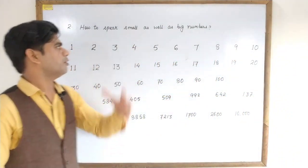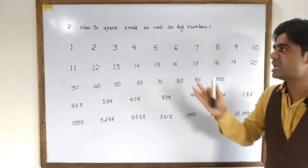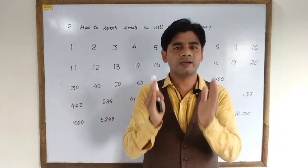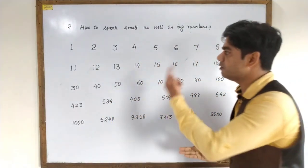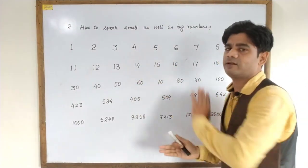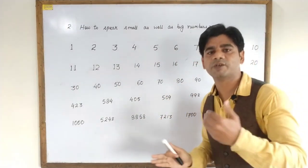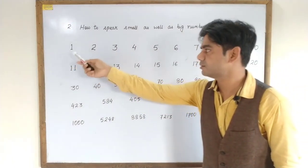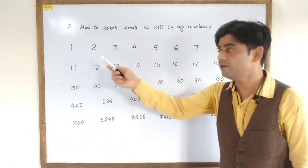The next topic of today's video session is about how to speak small as well as big numbers in an American or Indian accent. First we will be trying to pronounce all these numbers in an Indian accent, and later we'll pronounce them in an American accent. I will read it twice and you will repeat it twice after me.